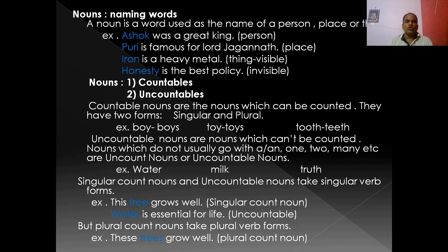Take the example: Ashok was a great king — here Ashok is the name of a person, so Ashok is a noun. Puri is famous for Lord Jagannath — Puri is the name of a place, so it is a noun. And iron is a heavy metal — iron here is a thing, it is visible, we can see it, so it is a noun.